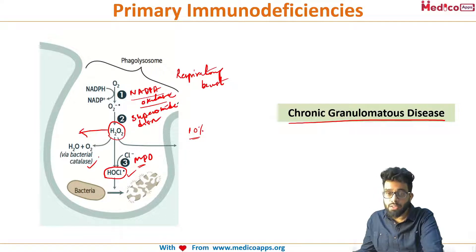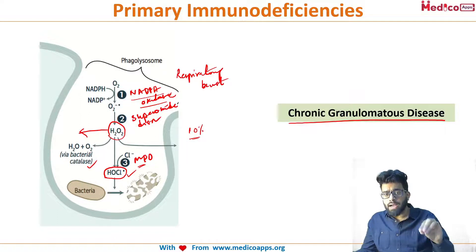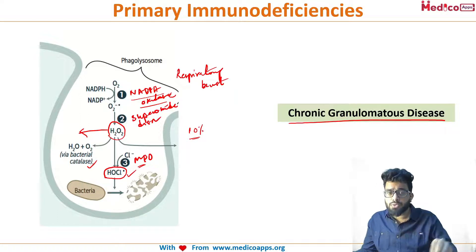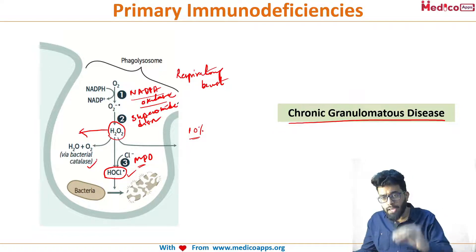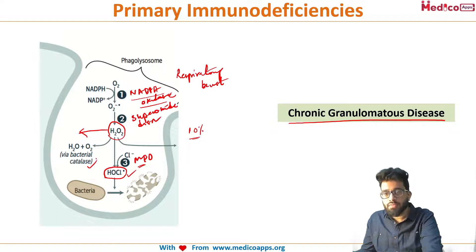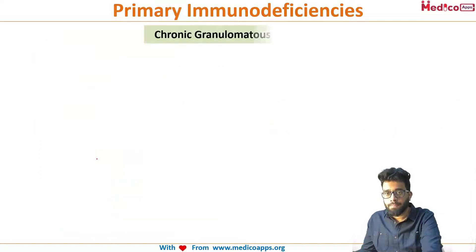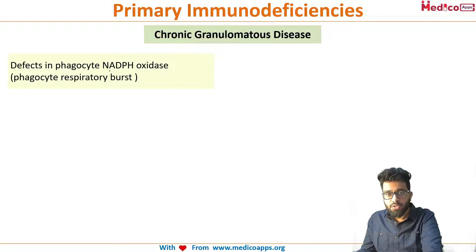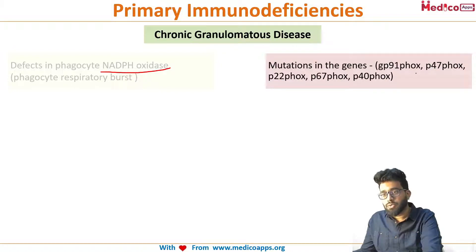In this particular group, you have infections with bacterial organisms which produce catalase. Catalase-producing organisms are the main infections in this disorder because of the defect in respiratory burst. CGD involves a defect in NADPH oxidase enzyme, which is the key enzyme in respiratory burst. There are two common mutations in CGD — you don't have to remember all of them, but these two are the most important.